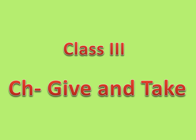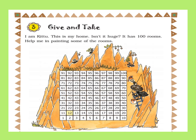Let us begin with the chapter Give and Take. This is an ant. Its name is Kitu. It has a home with a hundred rooms. Isn't it huge? It wants you to help paint its home. There are hundred rooms and ten rooms are arranged in each row, one above the other.